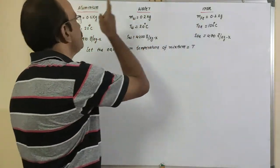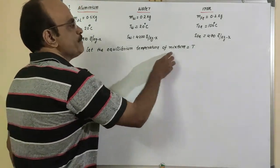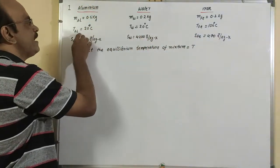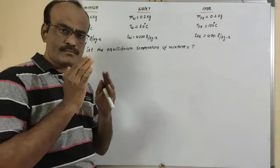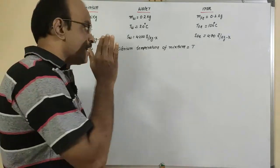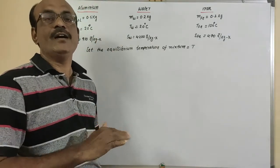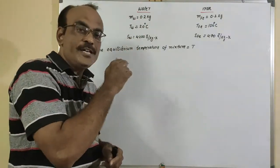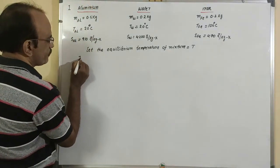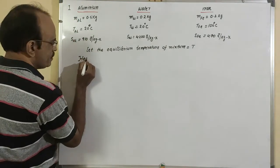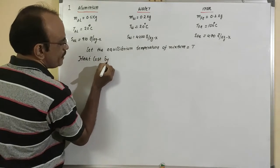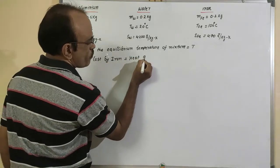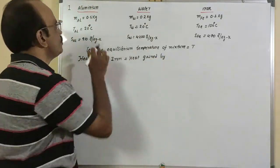We want to find the resultant temperature after adding iron into the aluminum vessel containing water. That resultant temperature T must be less than the iron temperature and greater than the aluminum and water temperature. According to the principle of calorimetry, heat lost by the hot body equals heat gained by the cold body. Iron is the hot body; aluminum and water are the cold bodies.